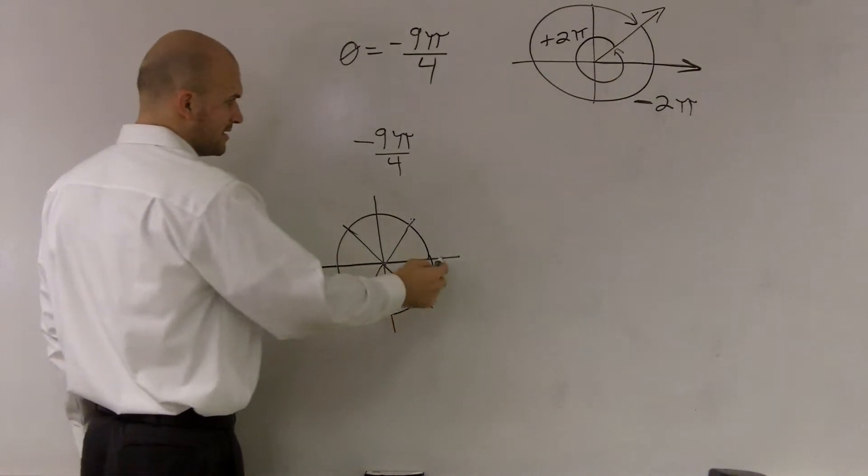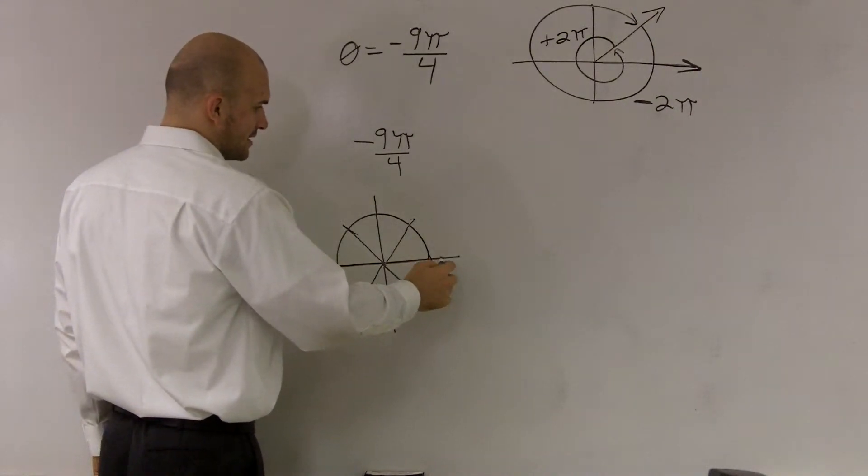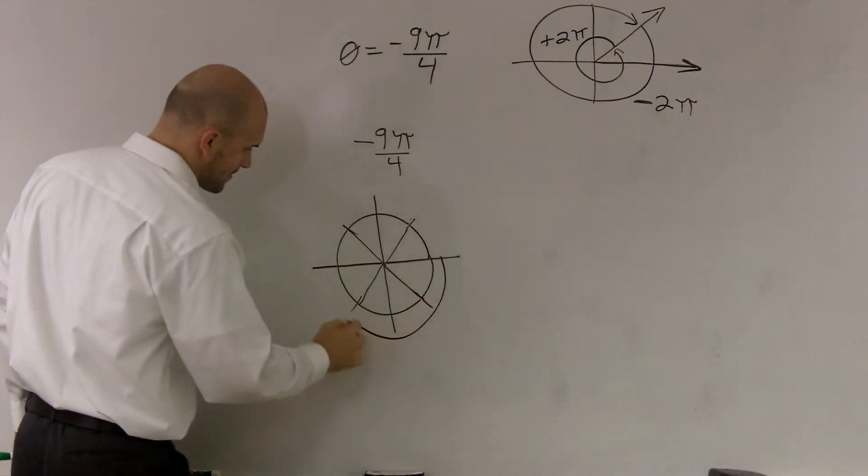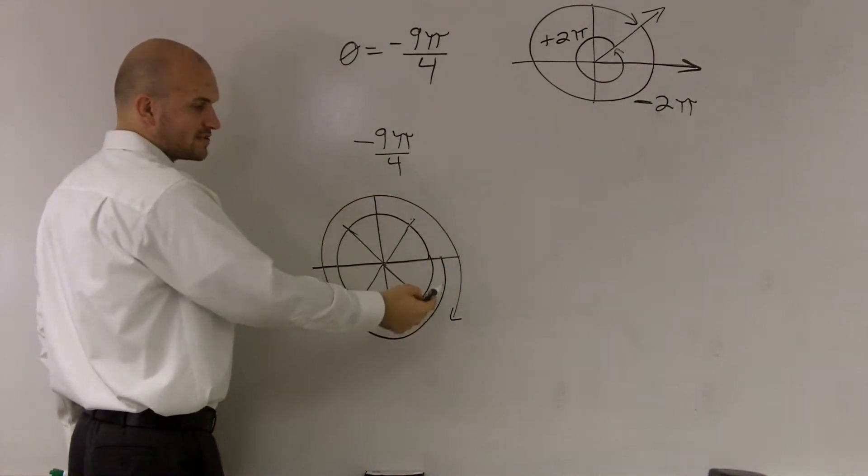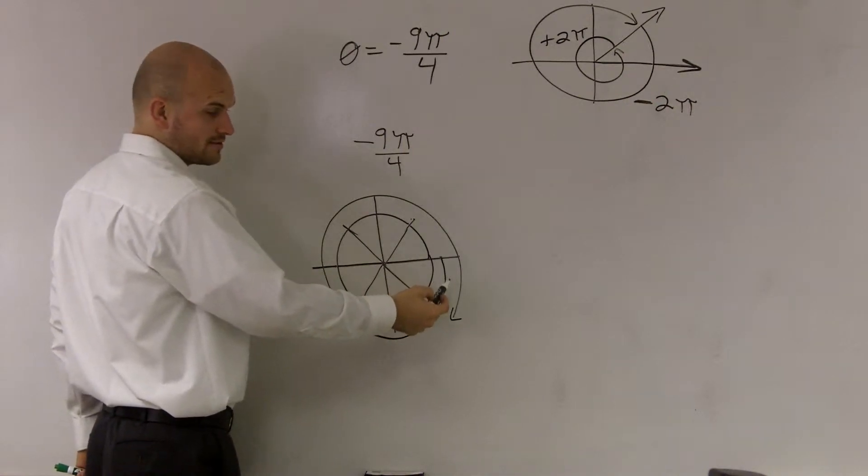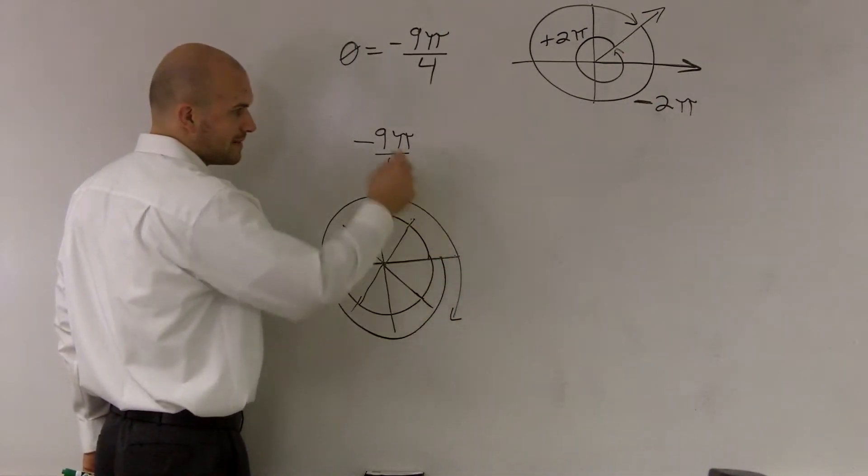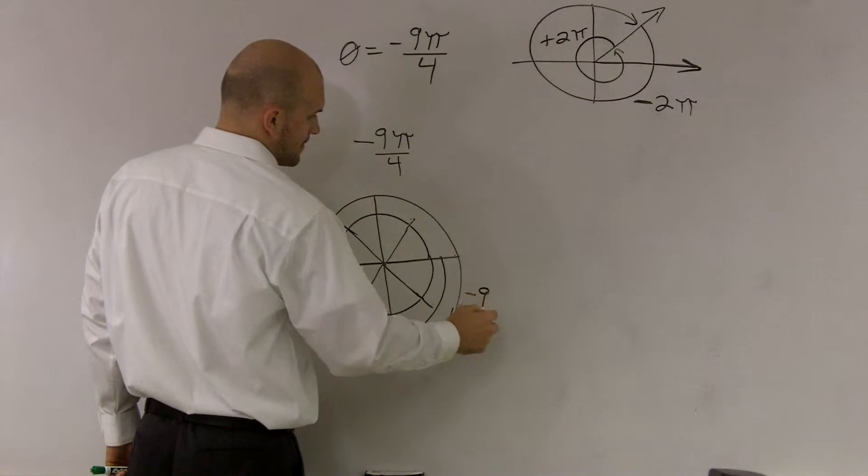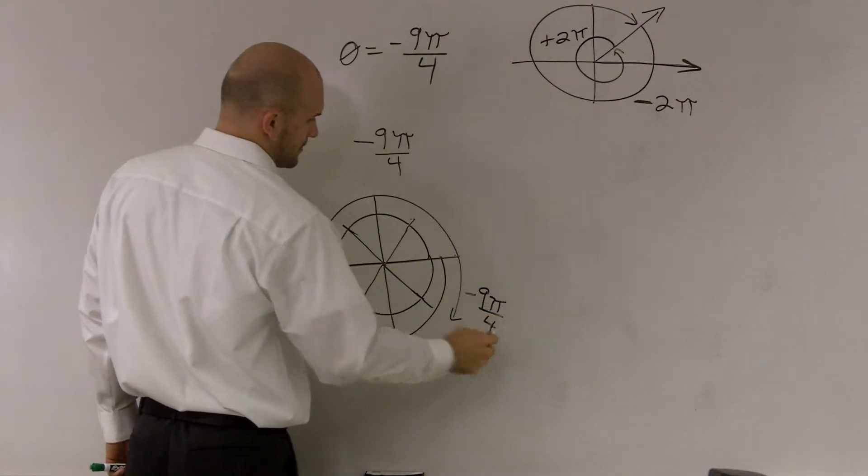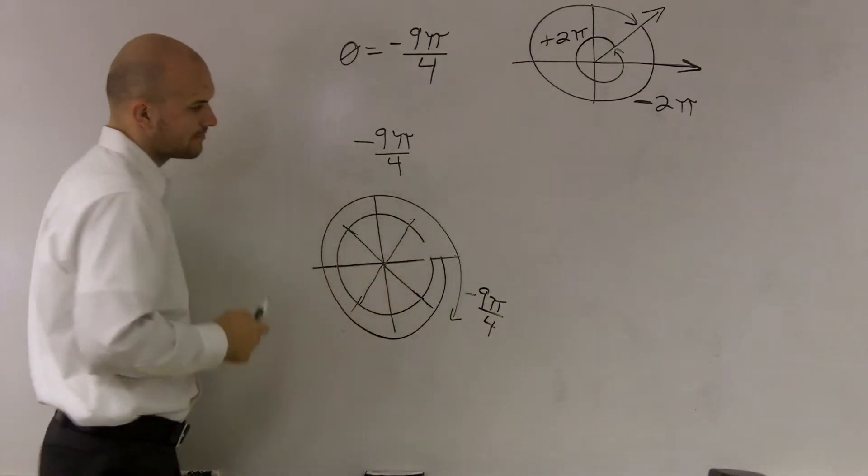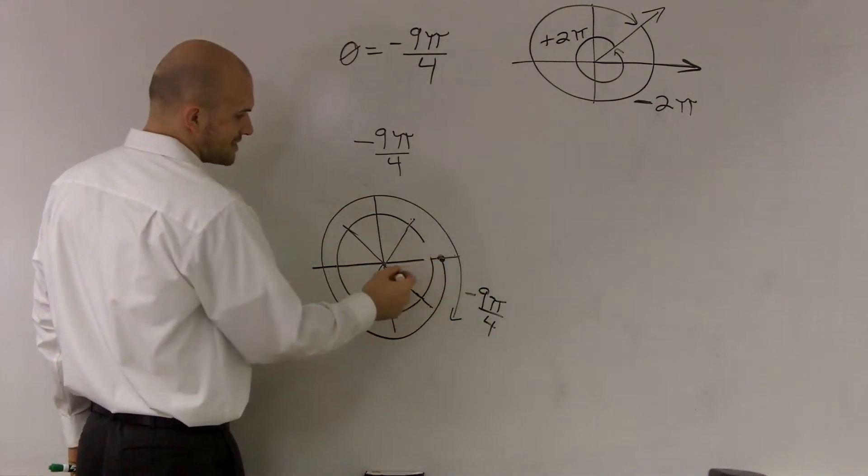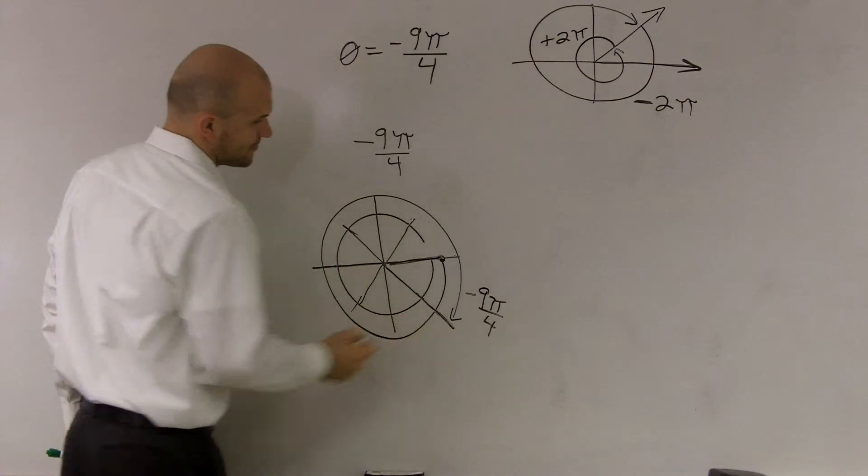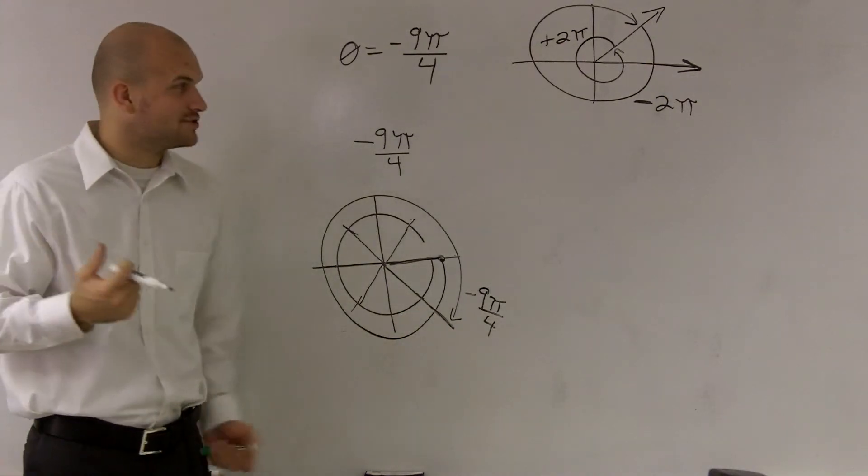So let's look at what my angle would be. Negative 9 fourths is going to be going all the way around, because all the way around 360 degrees is negative 8π. And going an extra one more π would be negative 9π. Does everybody see how I got to that angle? So that is the angle. Here's my initial side and then here's my terminal side.